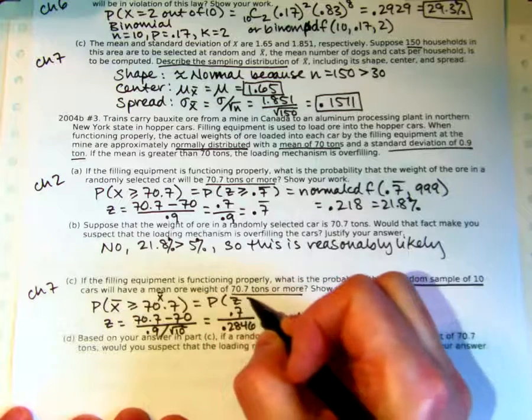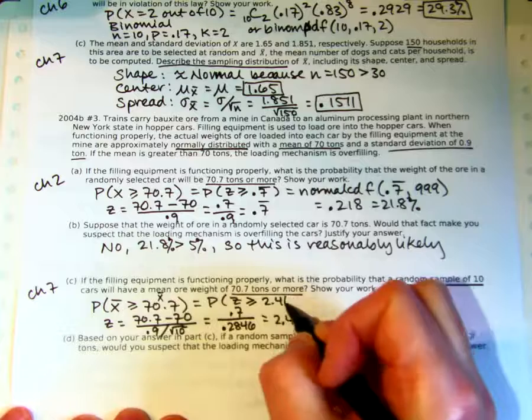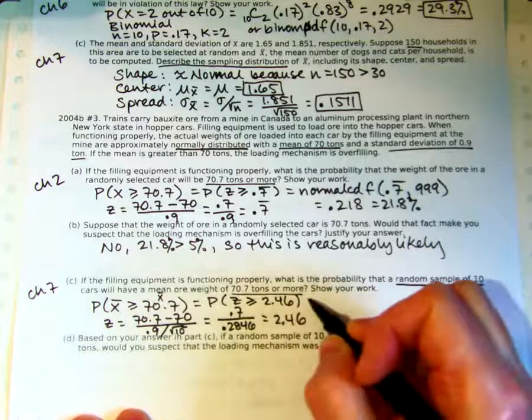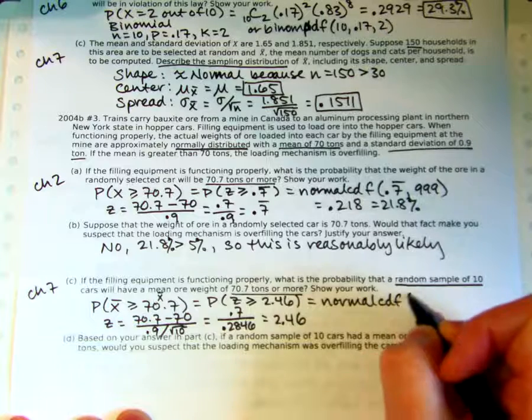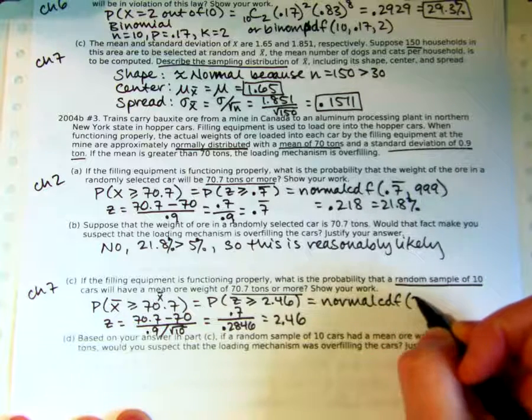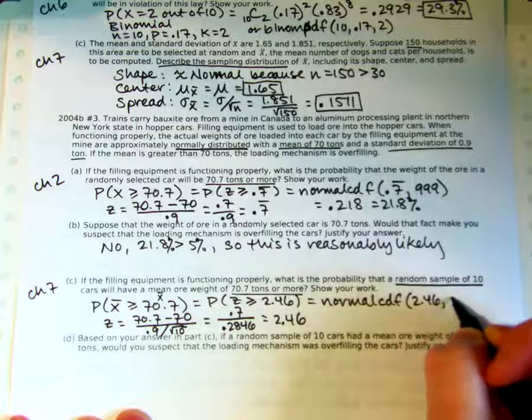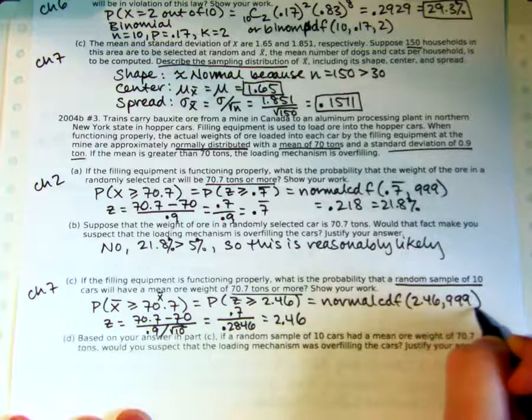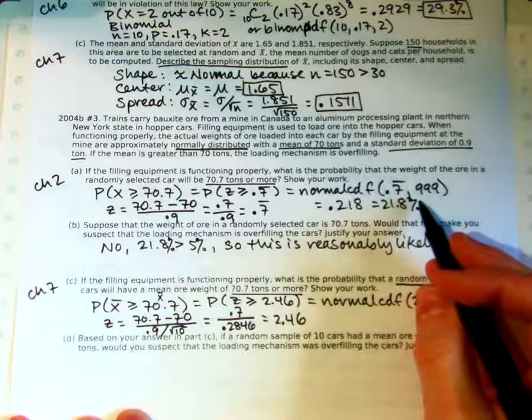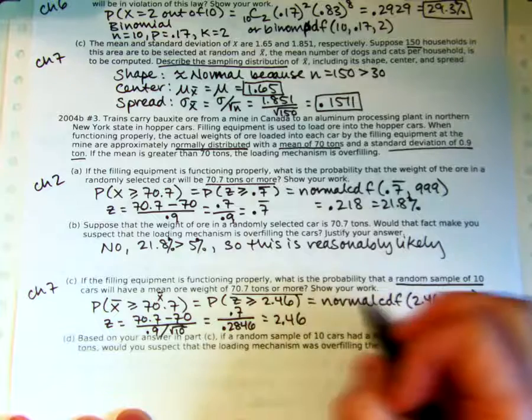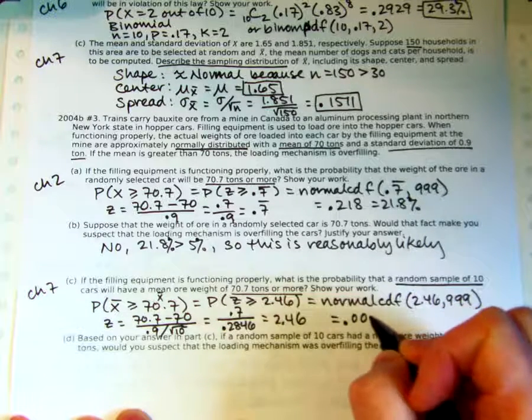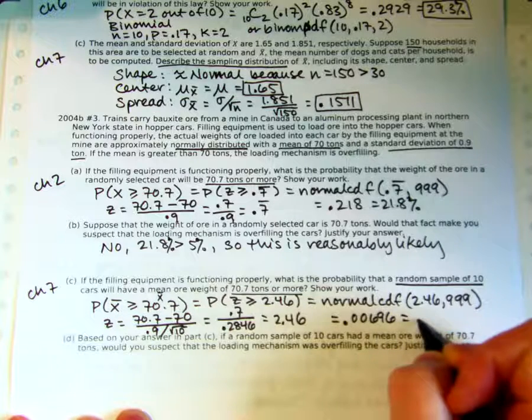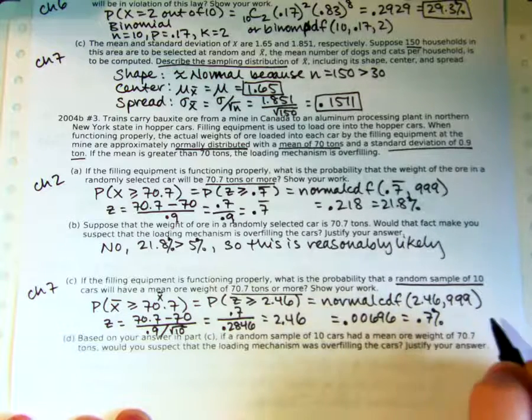The probability that z is greater than 2.46. And that would be another normal CDF. We're seeing a theme here, I hope. Of 2.46 and 999. Almost exactly what we did up above, except notice my z-score is different now. So I got a really small probability, 0.00696, which is like 0.7% approximately.